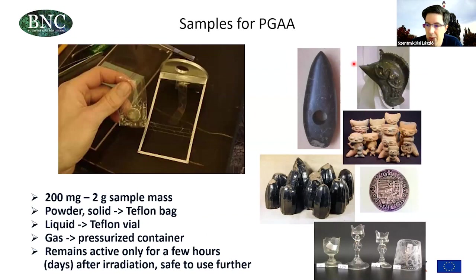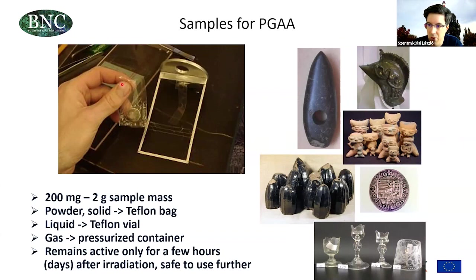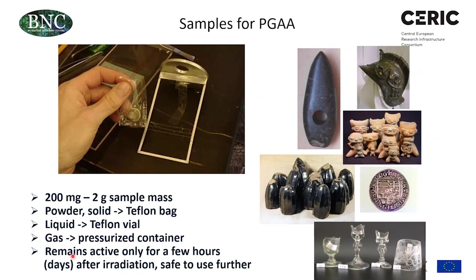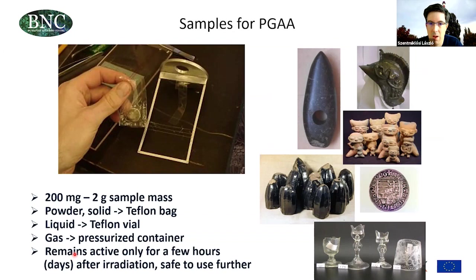Typical samples for prompt gamma activation analysis are difficult to dissolve, expensive, or valuable — everything where non-destructivity is an important factor. For small or powder samples, we put them into Teflon bags, typically needing between 200 milligrams and 2 grams. We can also measure liquids in Teflon vials or gases in pressurized containers. Some samples remain radioactive for a few hours after measurement, so we store them safely until they decay to clearance level, after which they can be reused without restriction.